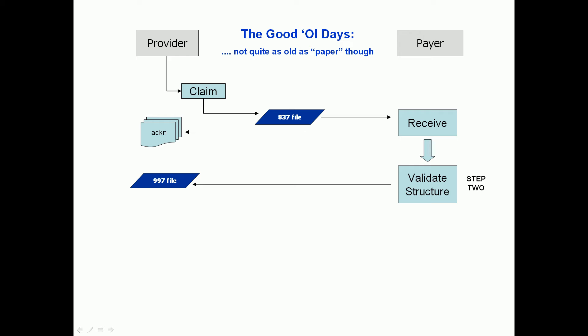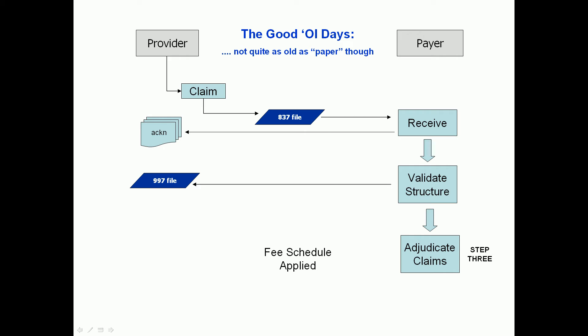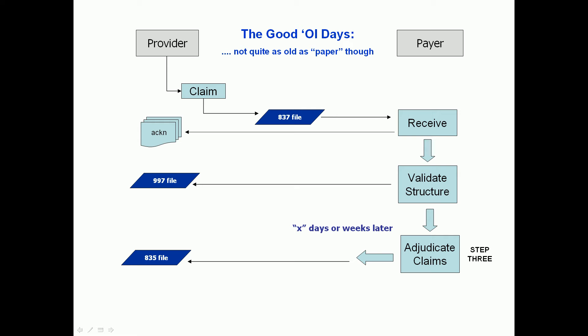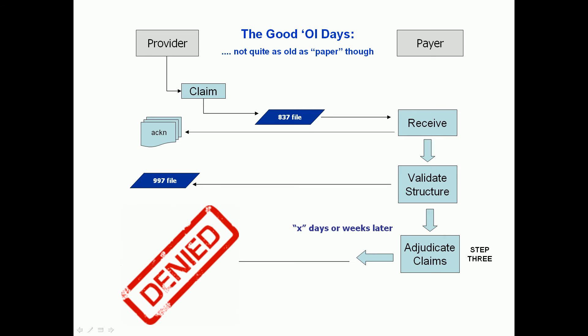For files that are structurally correct, they go into the adjudication system — your step three — where the claims are adjudicated against the benefit rules, against the fee schedules, et cetera. At some point later, usually many days, sometimes weeks later — in the old days it was a much longer cycle — the payer would communicate back the results of the adjudication on an 835 remittance file, where of course everything was denied. Well, not necessarily true — sometimes they're paid.